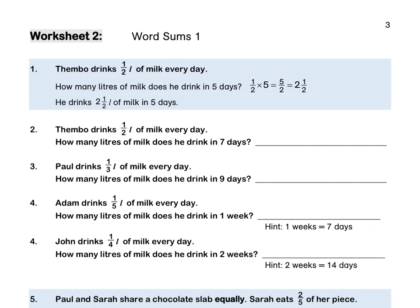Worksheet 2, Word sums. Tempo drinks half a litre of milk every day. How many litres of milk does he drink in 5 days? We have a half times 5, which is 5 over 2, which becomes 2 and a half litres. Press pause to complete up to question 5 by yourself.